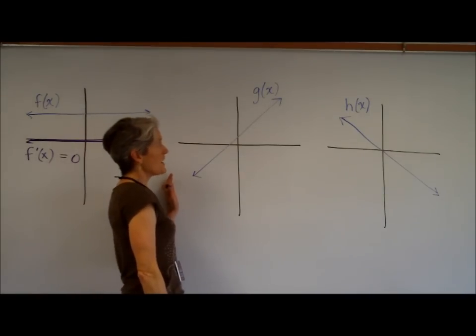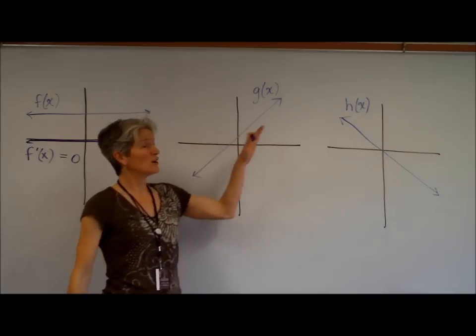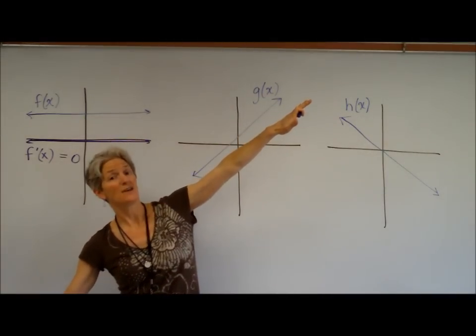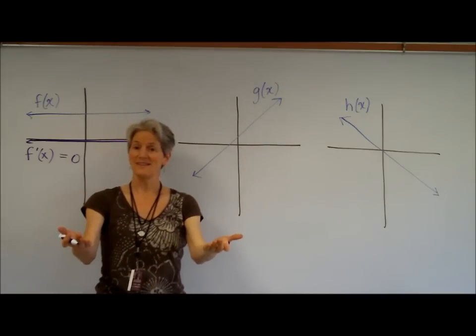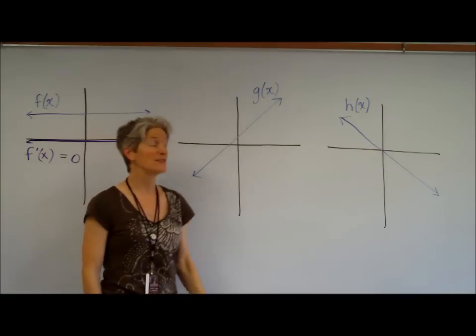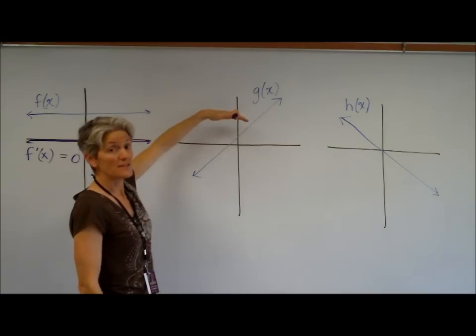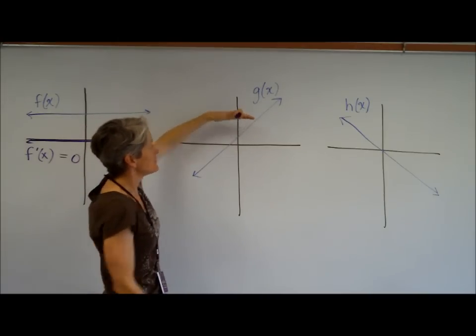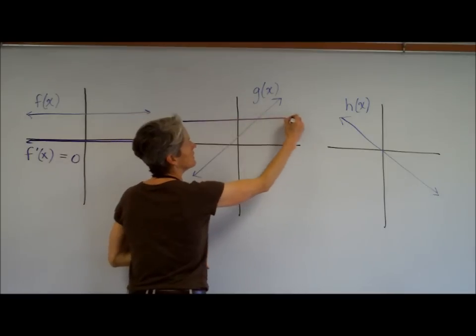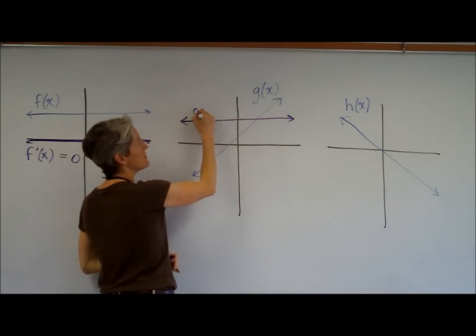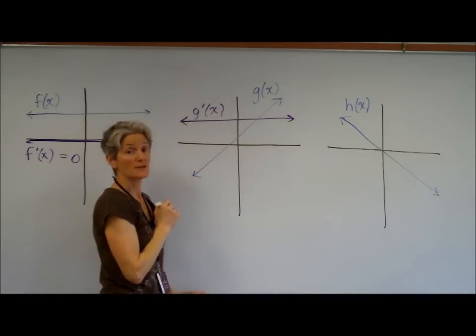Let's look at this guy. We have g of x. It's a linear function with a positive slope. What do we know about linear functions? They have constant slopes. They have a constant slope. So my derivative, g of x is going to be something constant and something positive. Boom. Something like that would be my g prime of x.